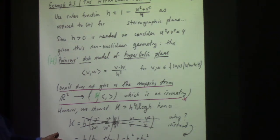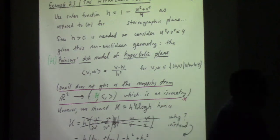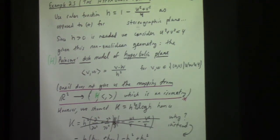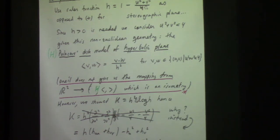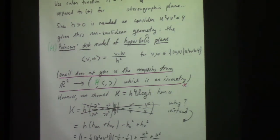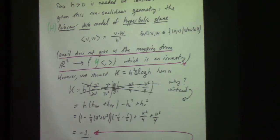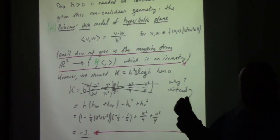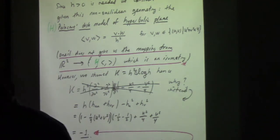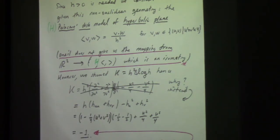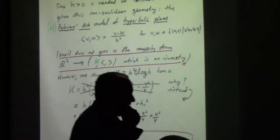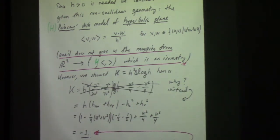In this case, you can calculate the Gaussian curvature using that formula from a couple slides ago. When you do the partial derivatives for this ruler function, you get minus one — just like our half-plane. This is another model of hyperbolic space with constant curvature minus one, but quite different looking. The geodesics in this space would be something other than half circles and vertical lines.